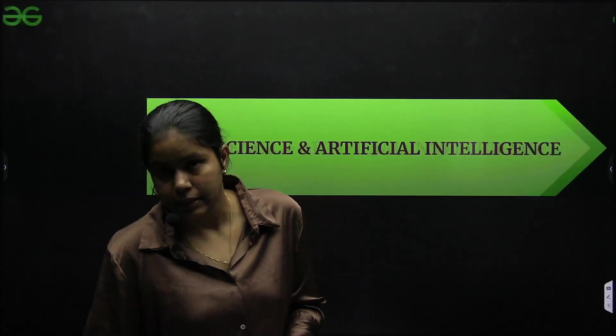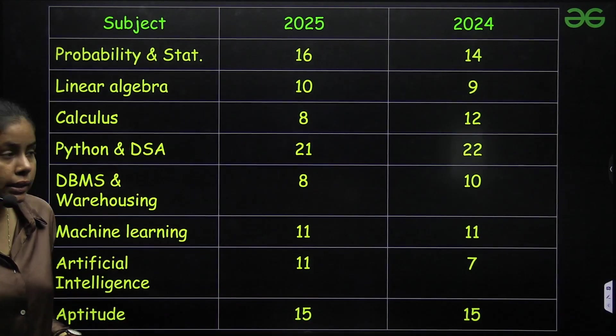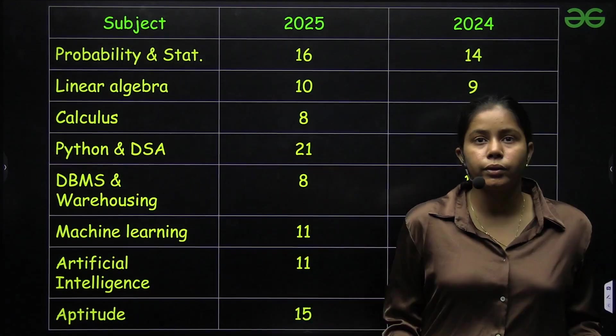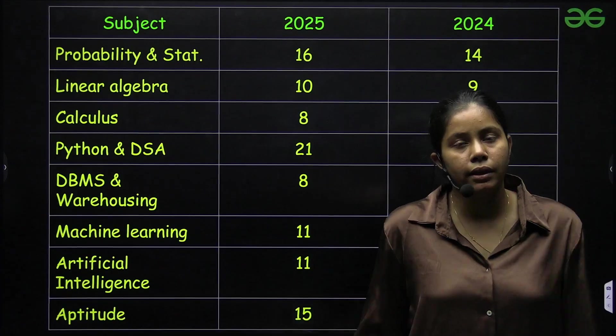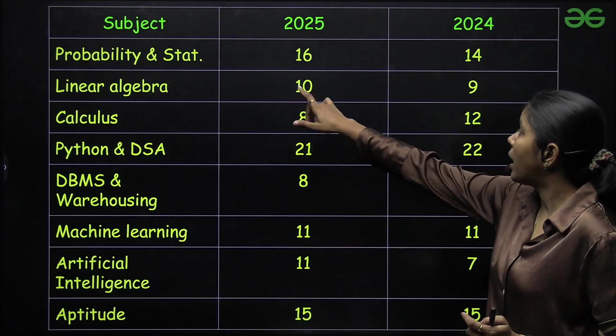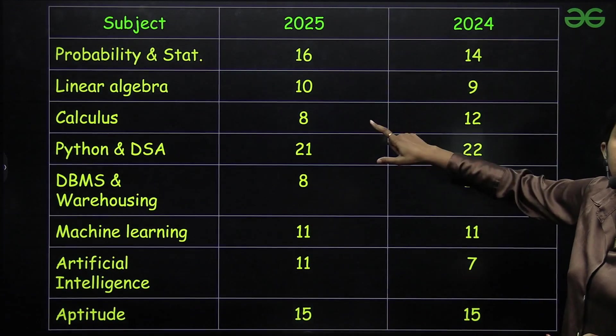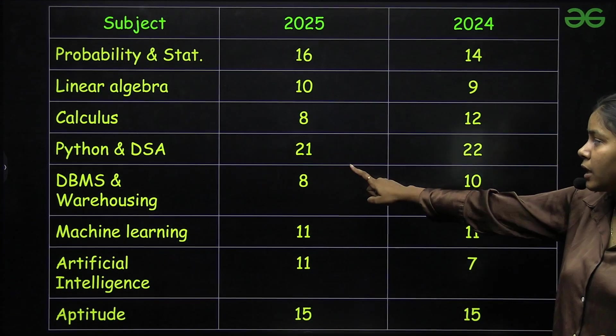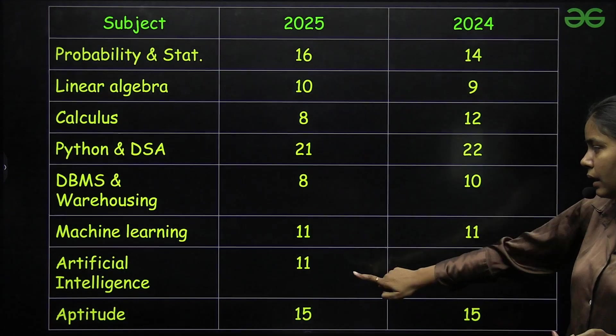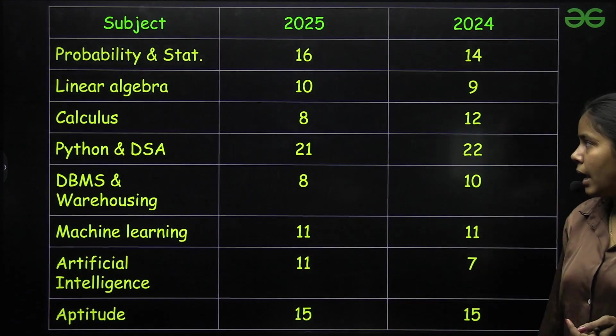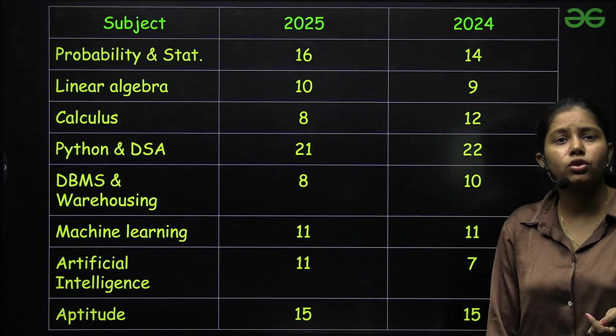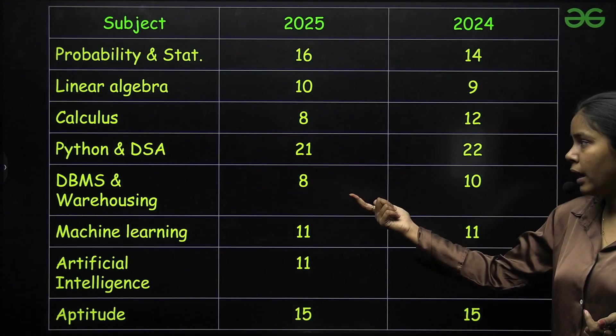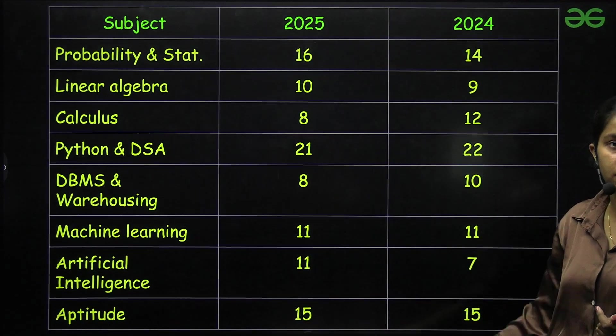Now next we have data science and artificial intelligence. Let's go through the topics and subjects of data science and artificial intelligence. In data science and AI we do not have much data, we only have 2025 and 2024 because the exam started from 2024. So we have probability statistics 16 marks in 2025, 14 in 2024, linear algebra 10 marks, calculus 8 marks, Python DSA 21 marks, DBMS 8, machine learning 11, artificial intelligence 11, aptitude 15.